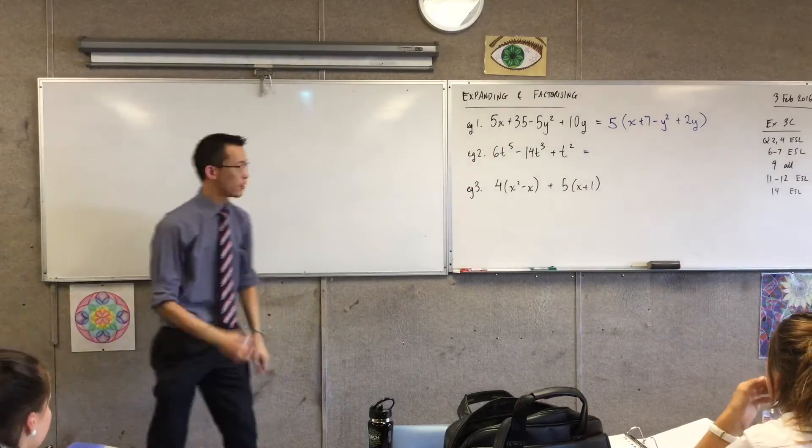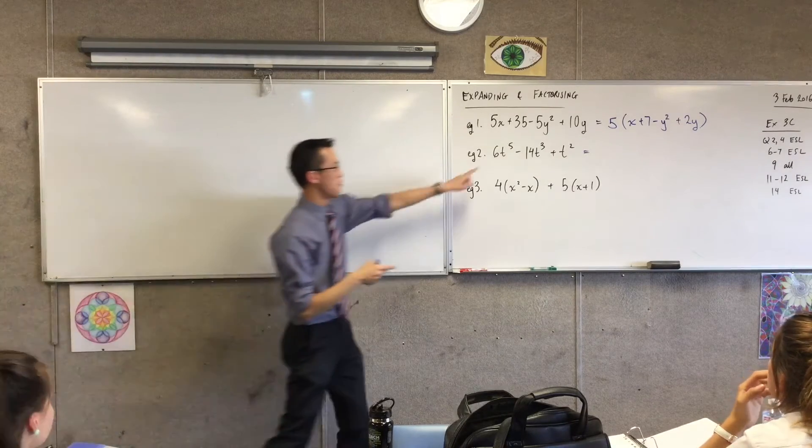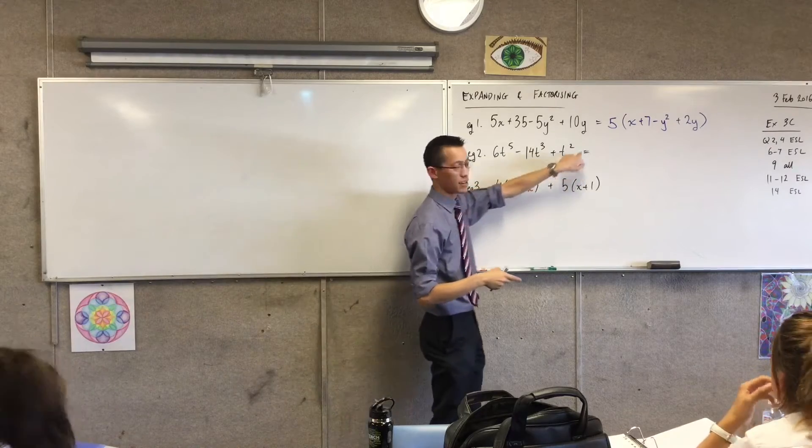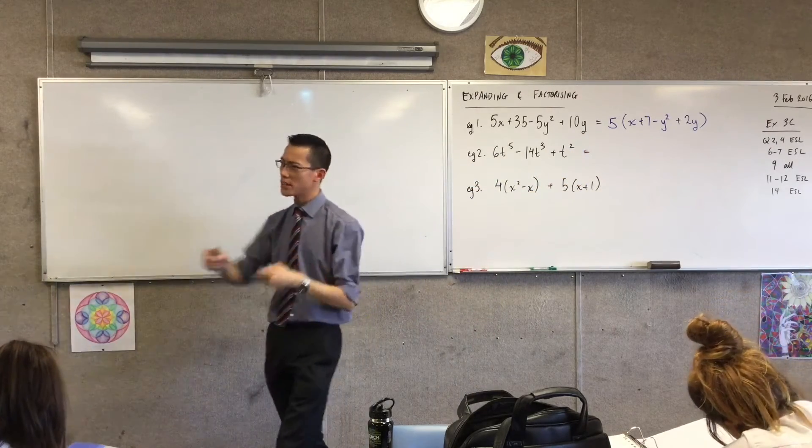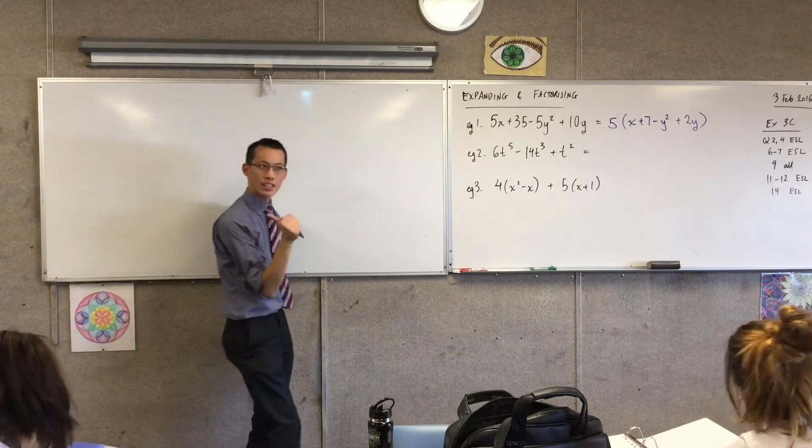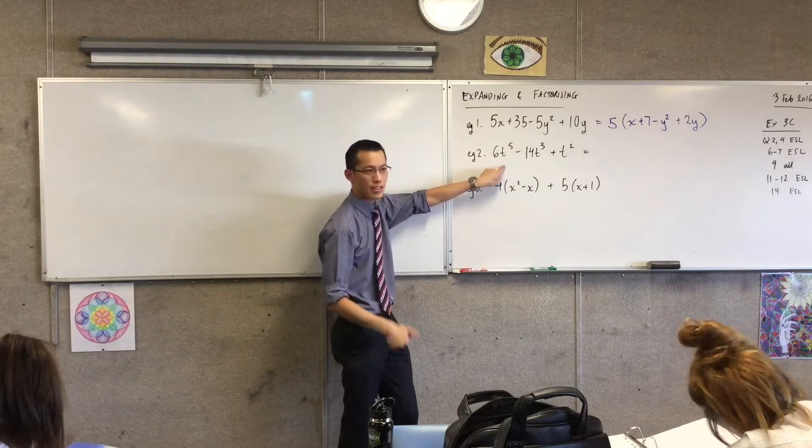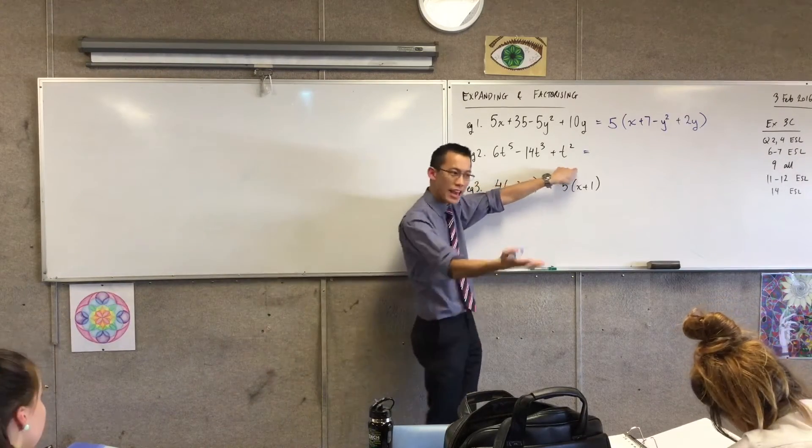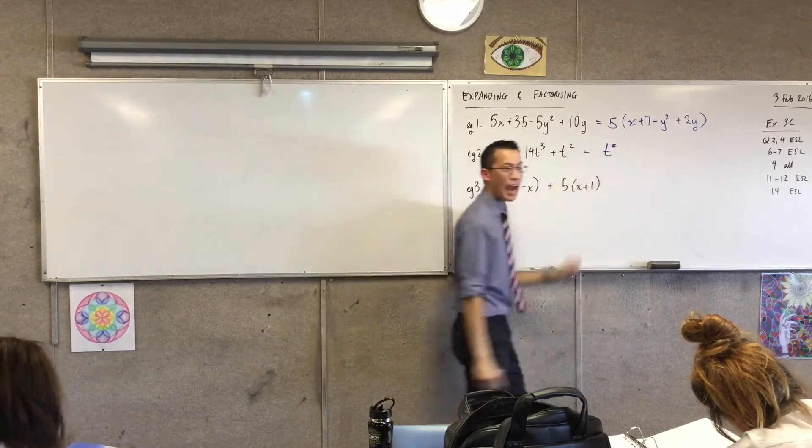You can do pronumerals as well. Have a look. 6T⁵ minus 14T³ plus T². I'm looking for a factor. What do I see in common between every one of the three terms? Okay, I have a T. I can do better than T though, can't I? In fact, there's 5 Ts here, there's 3 there, and there's 2 there. Yeah, so I can take out two of them, right? So I'm going to write T² out the front.